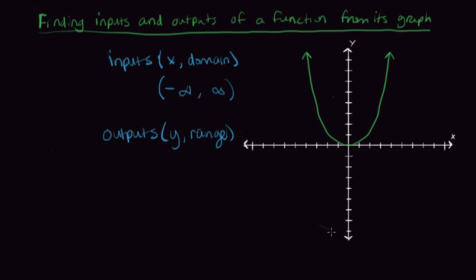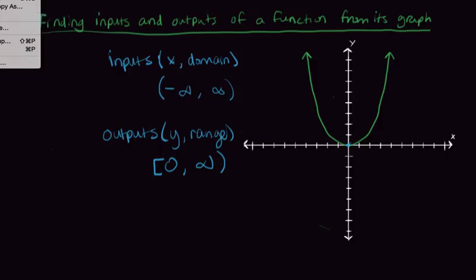There's a graph up here but no graph down here. So when I look for outputs, we start at zero and go up to infinity, but we don't have any negative numbers. Our output goes from zero to infinity, including zero because there is a point right at zero, but nothing negative. So our output or range is from zero to infinity.